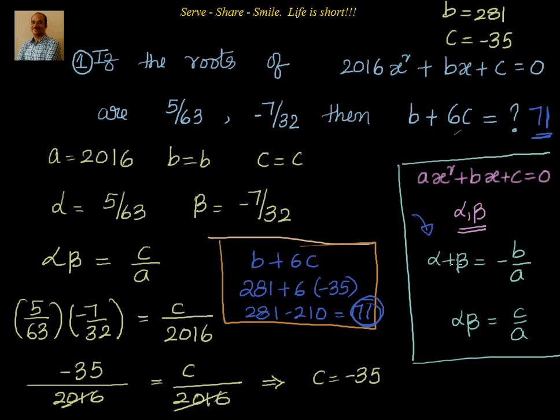That is, sum of zeros equal to -b/a and product of zeros is c/a. So we used both the equations. We are able to get the values of b and c. Then we substitute it to find out the value of b + 6c, which is a very straightforward problem. And the solution is 71. Thanks for your time.